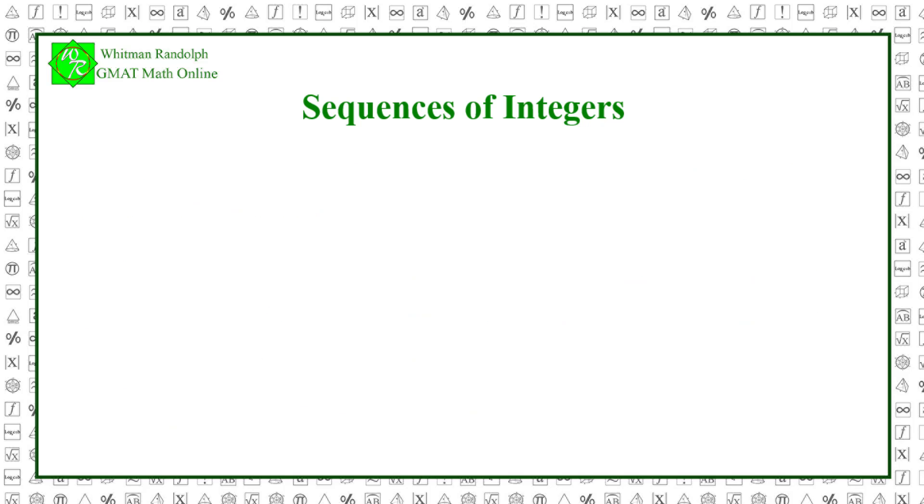The general formula for a geometric sequence whose first term is x and whose multiplying factor is k is x, x times k, x times k squared, and finally x times k to the n minus 1. In the previous problem, x was 3 and k was 2.